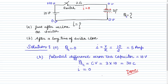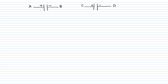In the third numerical, we are given two capacitors. The first capacitor has capacitance C1 = 2 microfarad with a potential difference of 20 volts, connected between points A and P. The second capacitor has capacitance C2 = 3 microfarad with a potential difference of 10 volts, connected between points C and B.